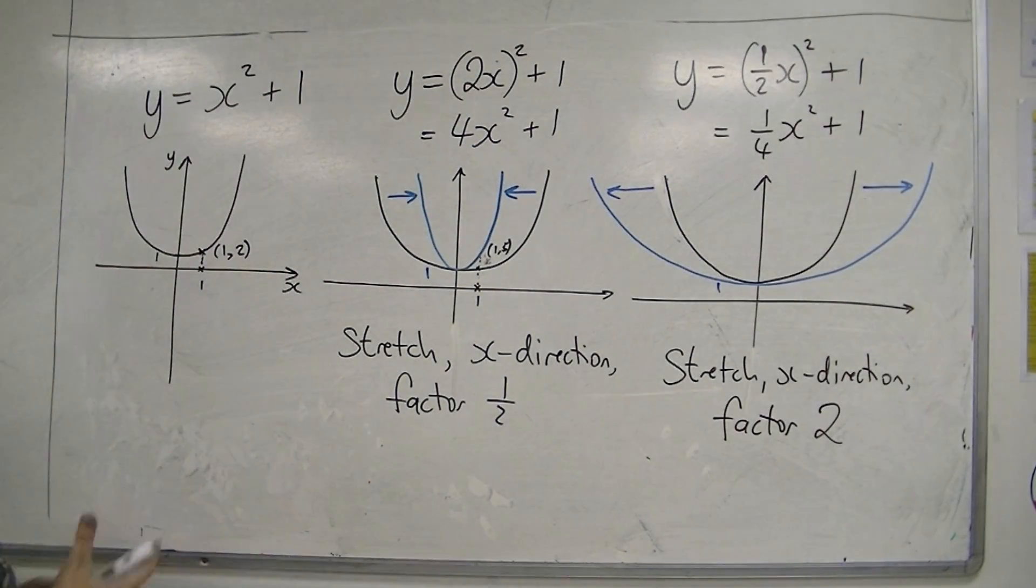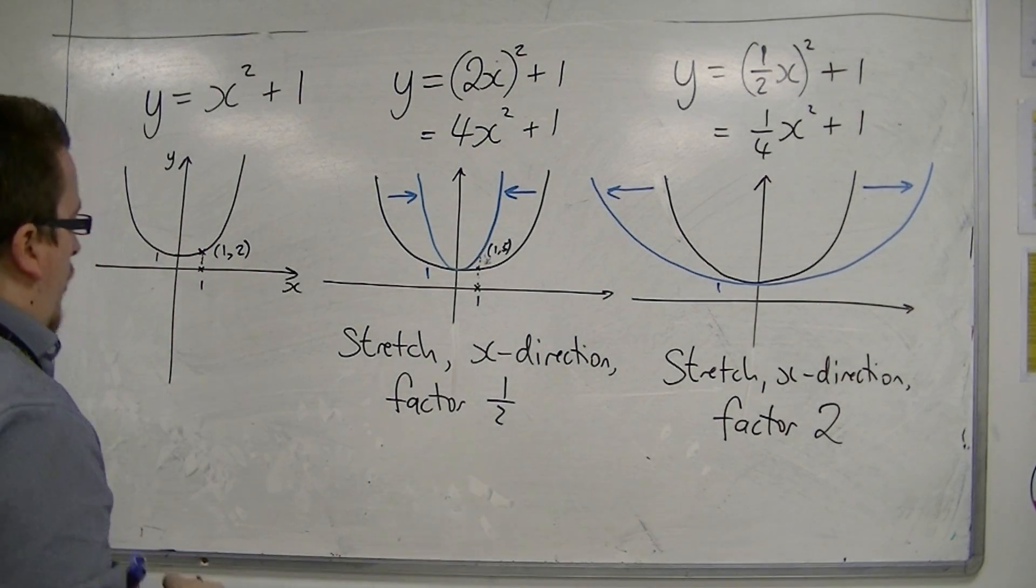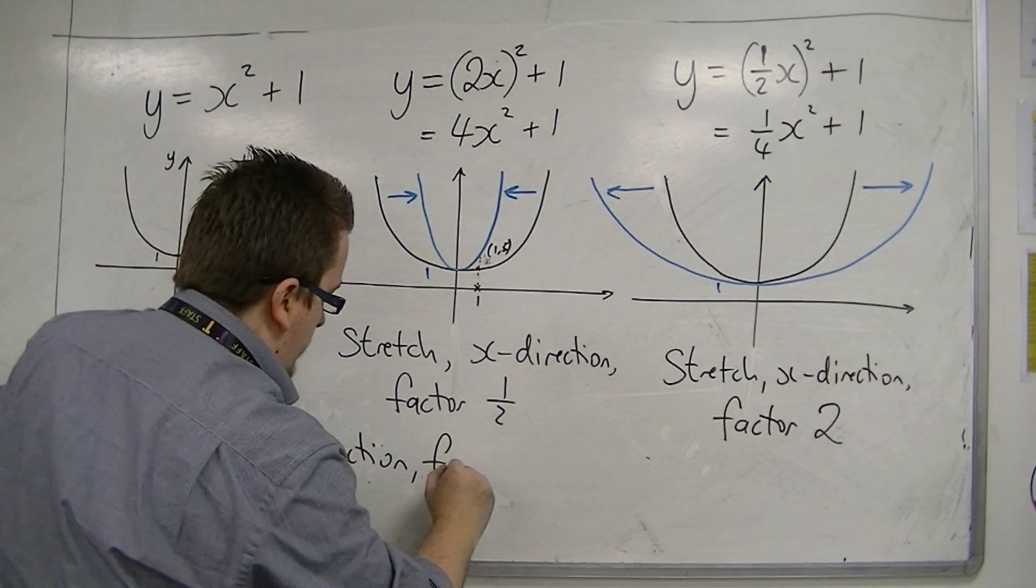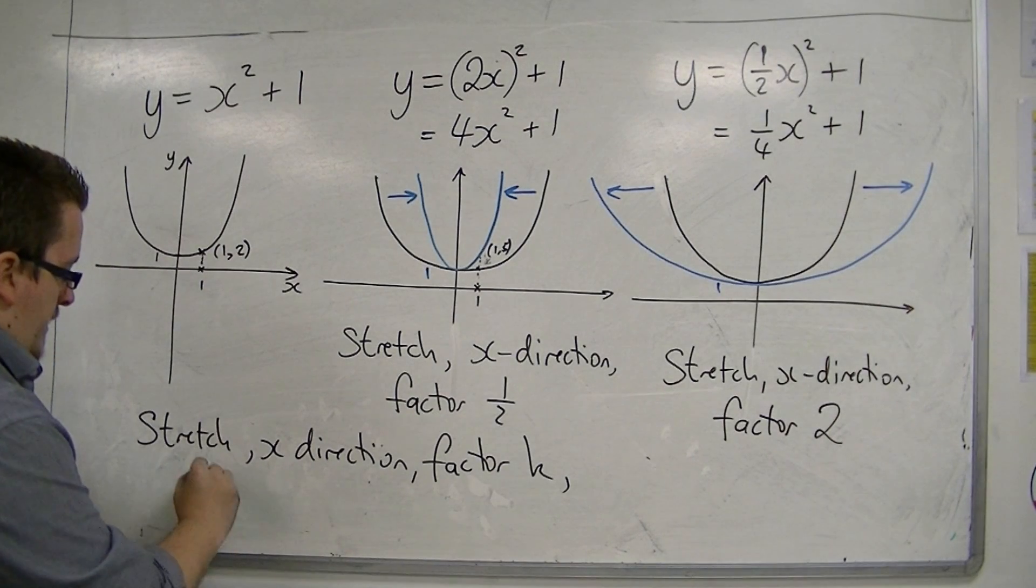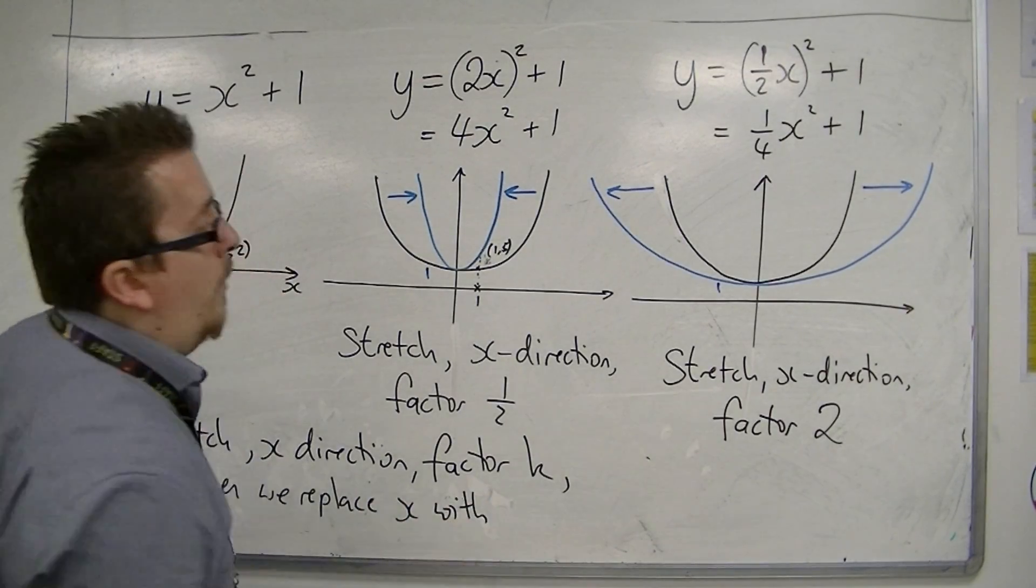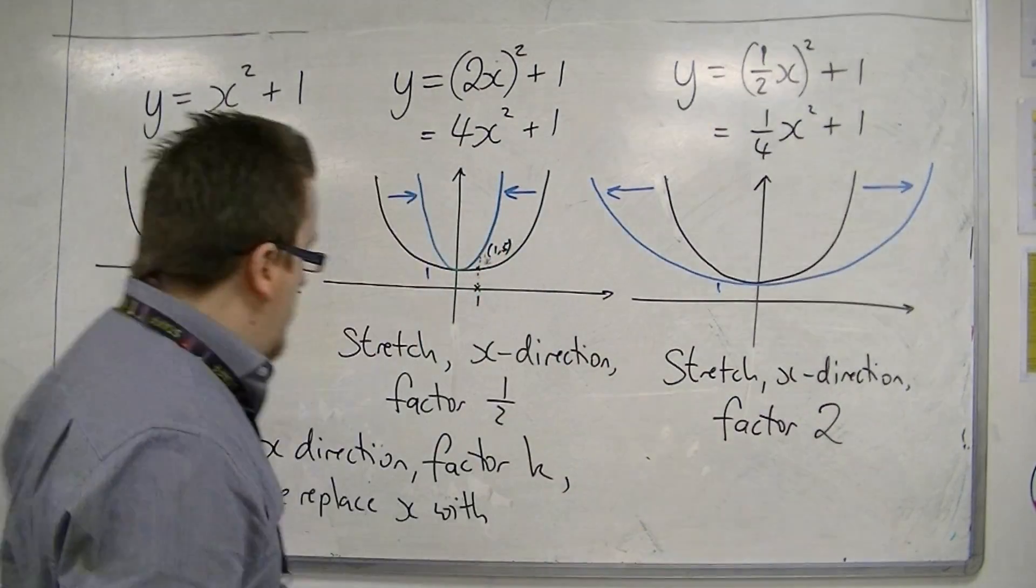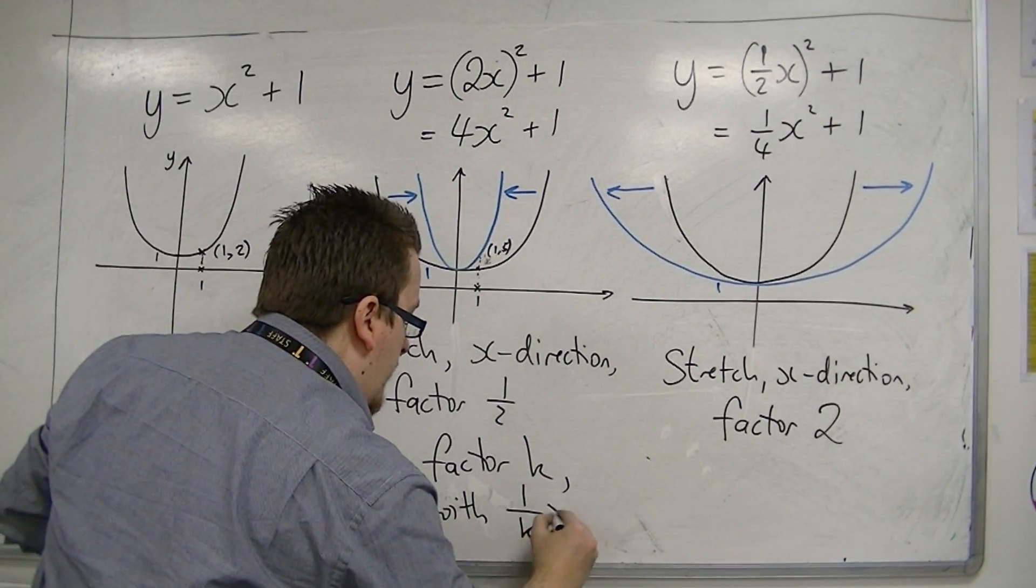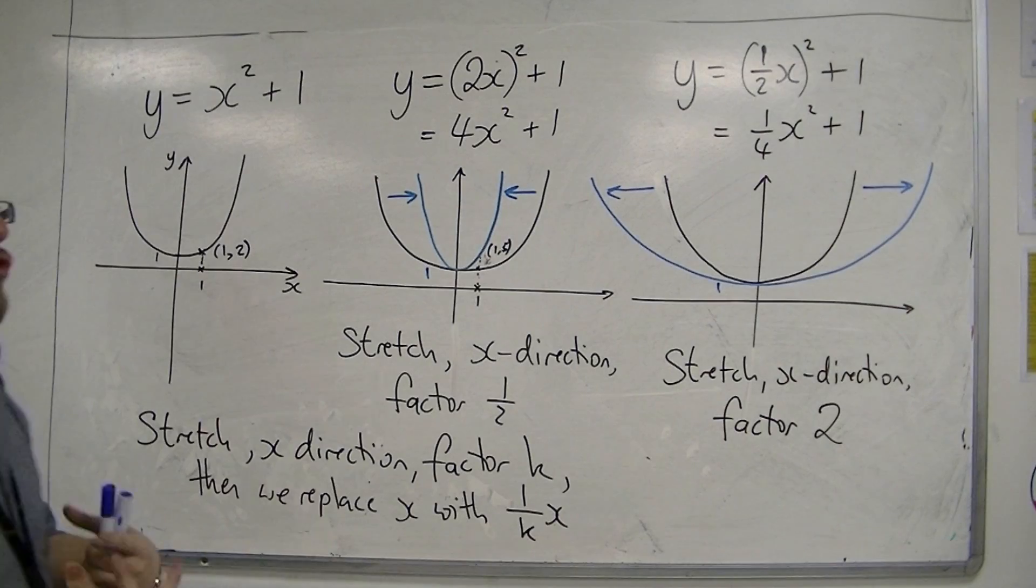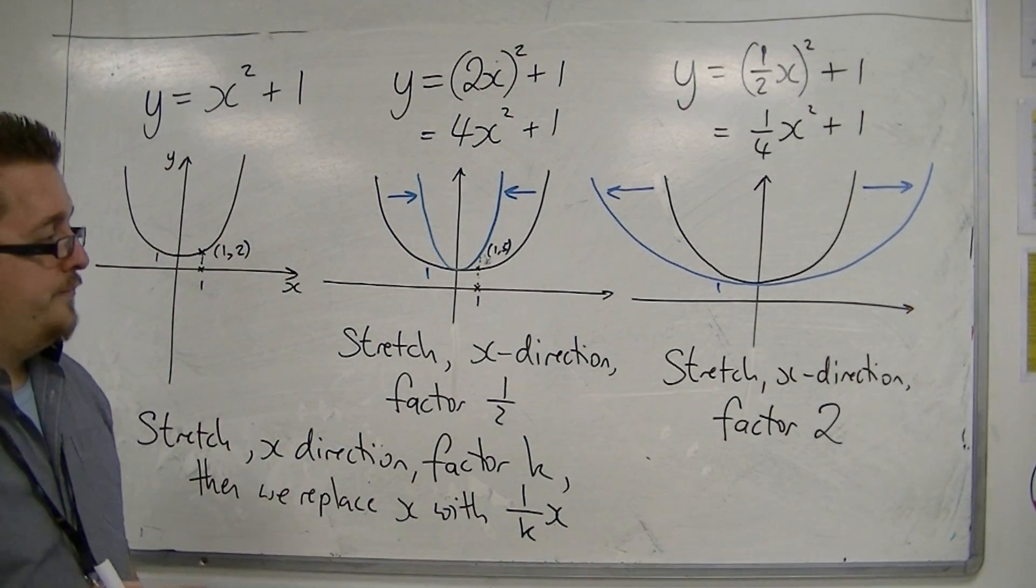In general, what we want to say is that in order to stretch in the x-direction by factor of k, then we replace x with 1 over kx. So it is the opposite way round. If you want to stretch a graph by a factor of 3, then you would replace x with 1 third x.